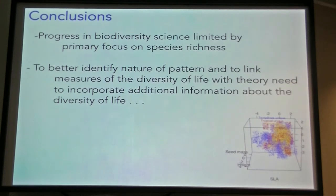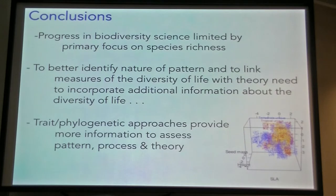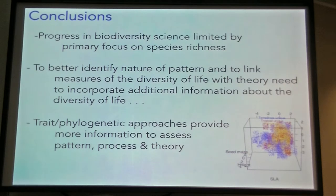To better identify the nature of variation in species richness, we need to link with other measures of the diversity of life. We focused on three: the diversity of functional traits and hypervolumes, phylogenetic diversity, and differences in rarity. These trait and phylogenetic approaches appear to provide more information, so we can go back to our theories and see what they actually predict in terms of phylogenetic structure and functional structure — a much more powerful approach to these diversity gradients.